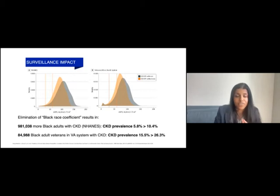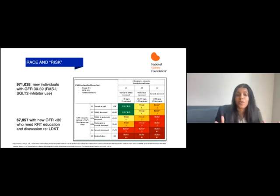This is really significant. We're talking about potentially nearly a million new individuals where we should be thinking about RAS inhibition, SGLT2 inhibition use, and almost 68,000 individuals who would have had a new GFR less than 30 who would need education about kidney replacement therapy.